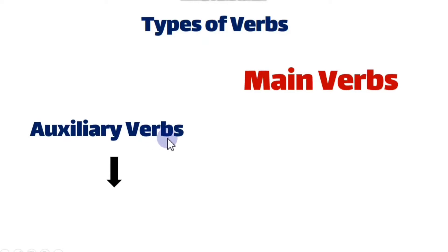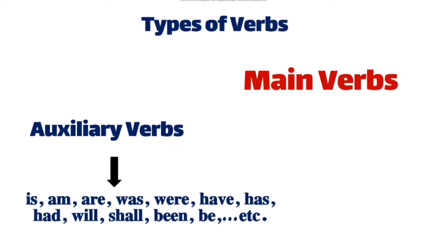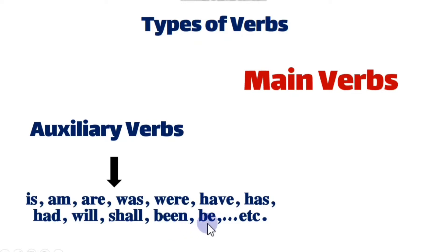Auxiliary verbs are those verbs that do not express the main actions or physical actions. They are: is, am, are, was, were, have, has, had, shall, been, be, etc. All of these are auxiliary — they do not express main actions; they are not physical actions. They are there in tenses to help and form different types of tenses. For example, is, am, and are form present continuous tense; was and were form past continuous; have, has, and had form perfect tenses; will and shall form future tenses; been forms perfect continuous tenses; and be forms future continuous tense.